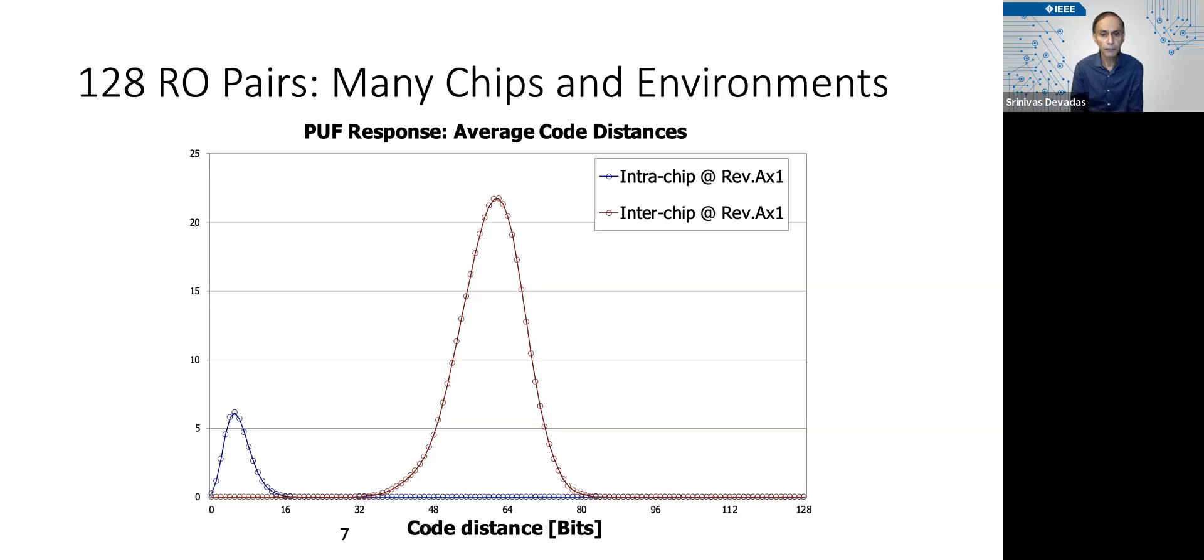Now, some preliminary experiments from years ago gave us this chart where we generated 128 bits from each chip or each PUF and compared random 128-bit vectors produced from different chips, and got this plot where the inter-chip variation is centered kind of close to 64, which is 128 divided by 2, and it's close to ideal.